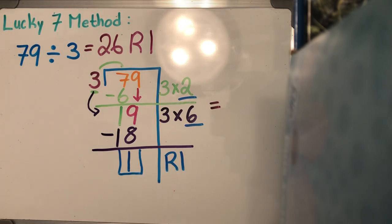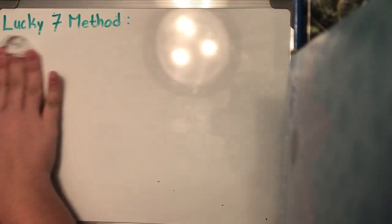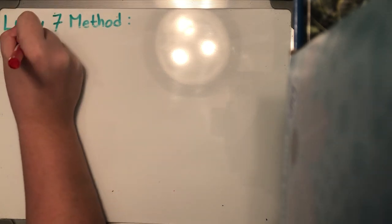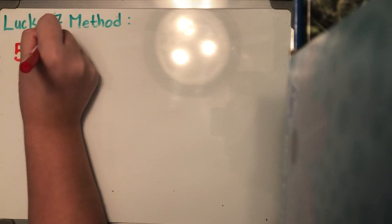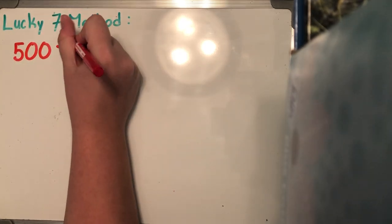Now we know we've been practicing a lot with bigger numbers, so we're going to get into some hundreds and some thousands places. Remember: lucky seven — multiply, subtract, bring down. Multiply, subtract, bring down. If you have to say that to yourself a bunch of times, then do so. You guys were doing really well with this method when we learned it in the classroom.